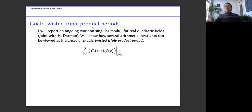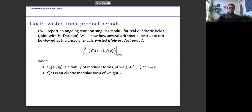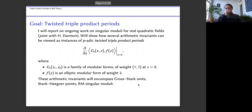I want to put it in a wider context and discuss several works, framing everything in the language of twisted triple product periods. These will be first-order derivatives with respect to some variable s of the Petersson inner product between two modular forms: an elliptic modular form of weight two, and an analytic family of Hilbert modular forms G(s, z1, z2) that specializes at s=0 to weight one comma one.